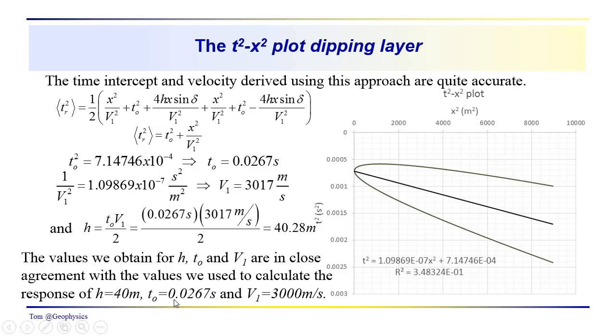H of 40 meters, T zero point 0267, and a velocity of 3,000 meters per second. We're doing a lot better actually with the intercept time, the velocity, and the thickness than we did analyzing the data in hyperbolic form.